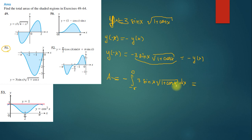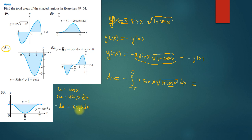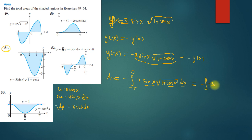I use the substitution u = cos(x), so du = -sin(x) dx, meaning -du = sin(x) dx. Therefore sin(x) dx is replaced by -du, and 1 + cos(x) becomes 1 + u. Substituting: minus integral of 3 · (-du) · √(1 + u), where I let u replace 1 + cos(x).